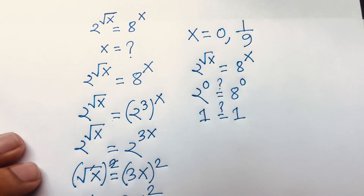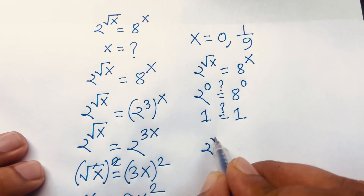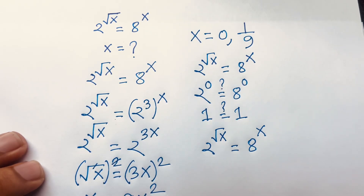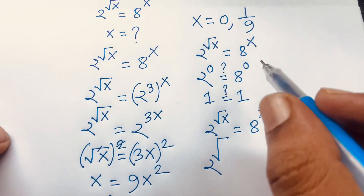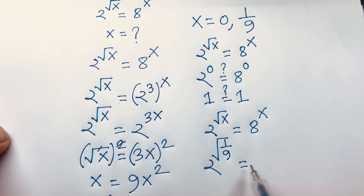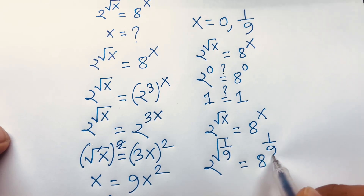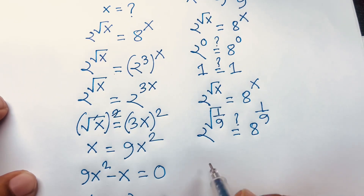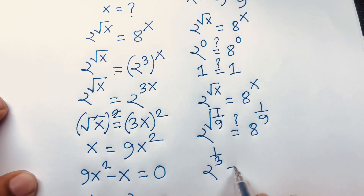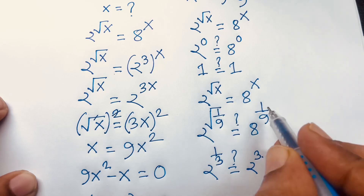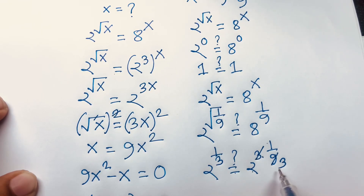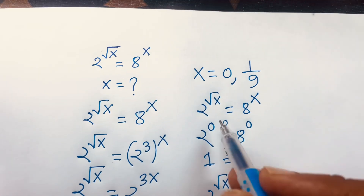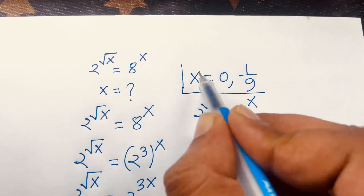For the other case, our question is 2 to the power square root x equals 8 to the power x, with x equal to 1 over 9. The left hand side becomes 2 to the power 1 over 3. The right hand side is 8 to the power 1 over 9, which is 2 to the power 3 times 1 over 9. Since 3 divided by 9 equals 1 over 3, we get 2 to the power 1 over 3 equals 2 to the power 1 over 3. So x equals 1 over 9 and x equals 0 are both correct answers.